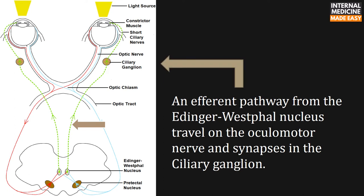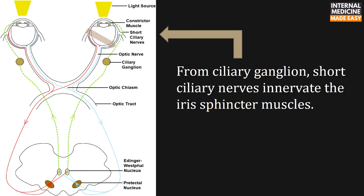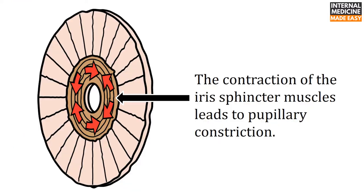An efferent pathway from the Edinger-Westphal nucleus travels on the oculomotor nerve and synapses in the ciliary ganglion. From the ciliary ganglion, short ciliary nerves innervate the iris sphincter muscles. The contraction of the iris sphincter muscles leads to pupillary constriction.